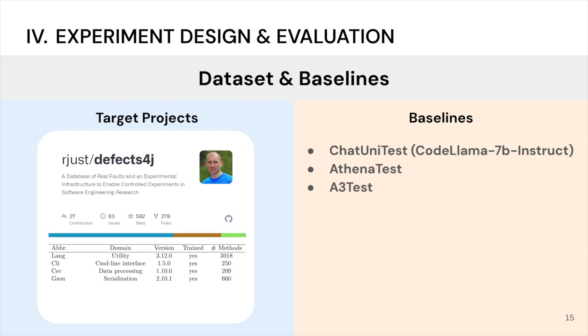Our target projects consider four projects from Defect4J: Lang, CSV, Gson, and CLI. These projects were previously chosen in the ChatUnitTest pipeline, and we utilized them for performance comparison.